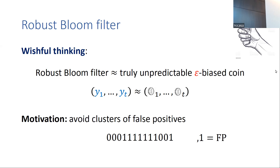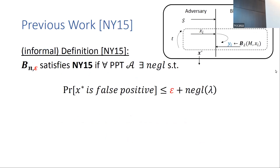We want to visualize false positives as random independent events. One motivation is that some applications using bloom filters are sensitive to clusters of false positives — false positives appearing one after the other in a sequence of queries. By requiring this wishful thinking, those events happen with small probability. Our starting point was the work by Naor-Yogev: following adaptive queries, the adversary must output an element it believes is a false positive, and it wins if this output element x* is indeed a false positive.